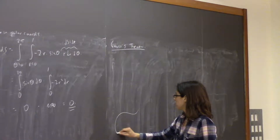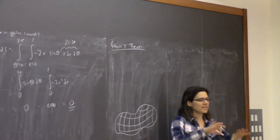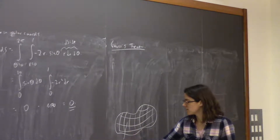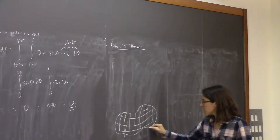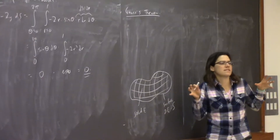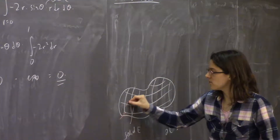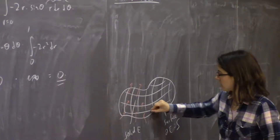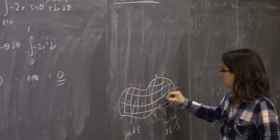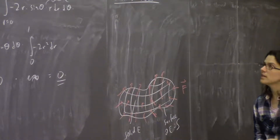Here's how Gauss's theorem goes. You have some solid chunk of stuff — like a nice smooth rock that's been sitting in a stream, solid inside. The solid region we usually call E, and the boundary surface — the boundary of E — we call S. So S is the surface, and the stuff inside S is the solid region E. You imagine that some vector field is flowing through it.